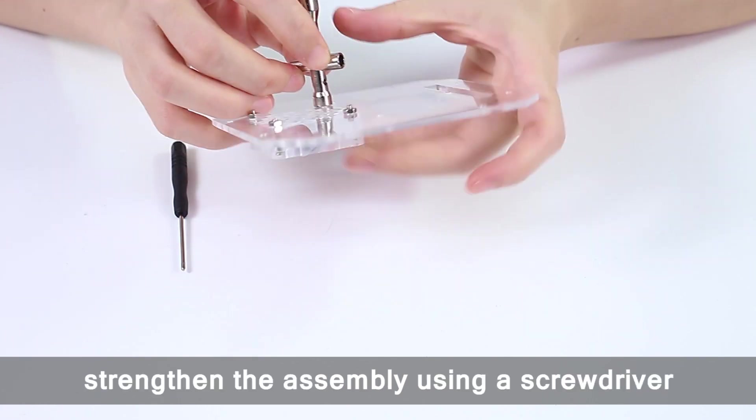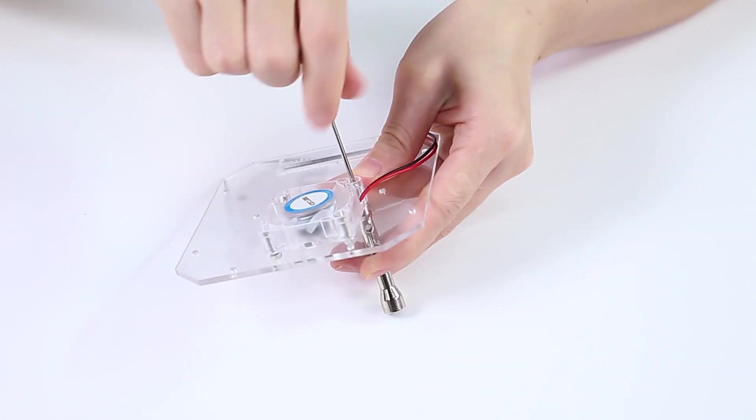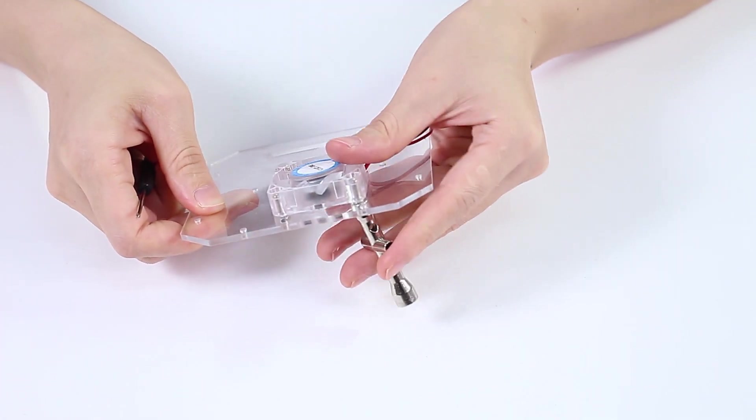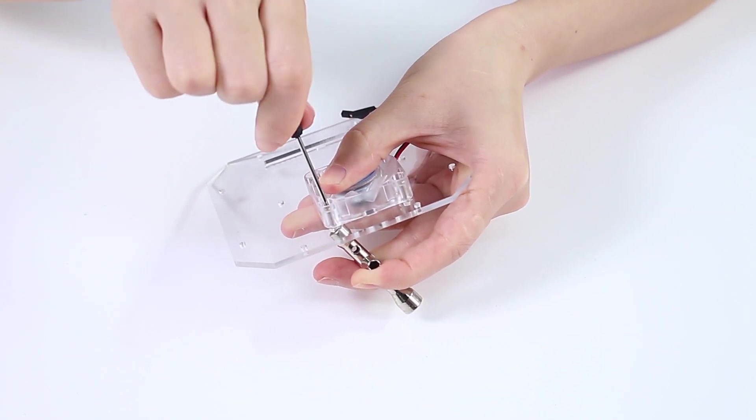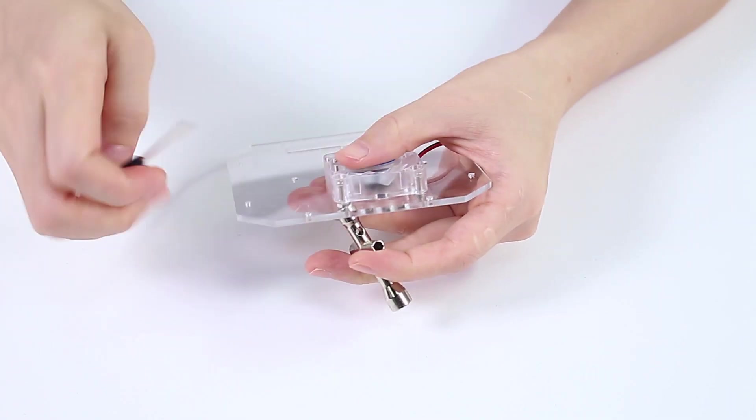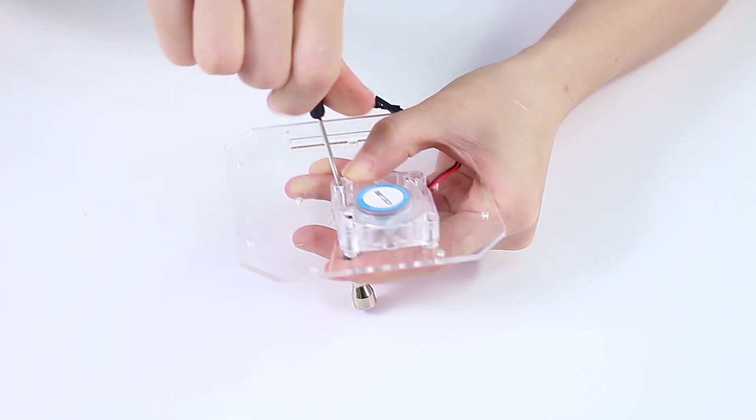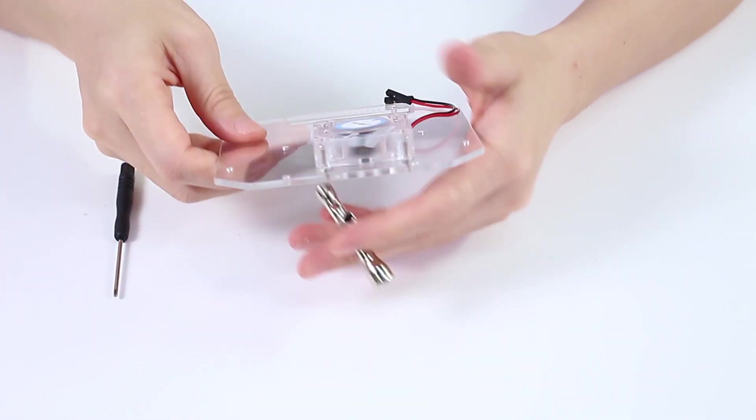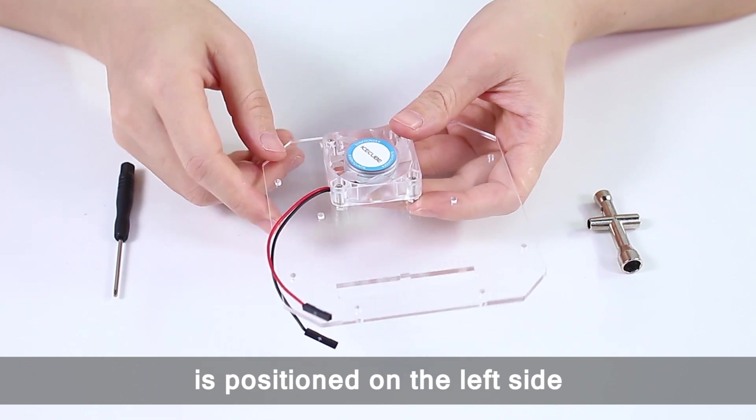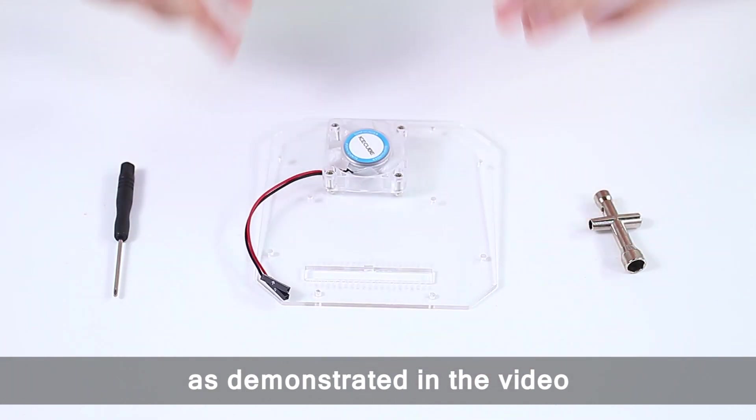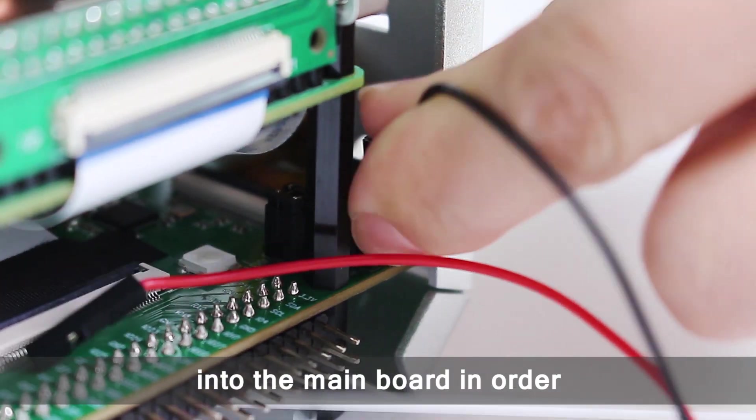Lastly, strengthen the assembly using a screwdriver and a cross wrench. Make sure the fan's cable is positioned on the left side, as demonstrated in the video. Now plug the fan cables into the main board in order.